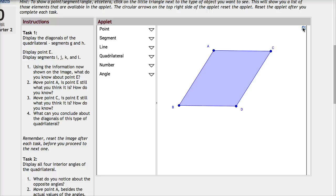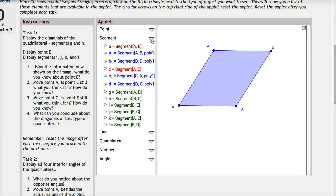The next thing you'll notice in your set of instructions is that it tells you to do certain things. For instance, when I look at task one, it says to display the diagonals of the quadrilateral, segments G and H. In order to do that, you're going to drop down the little segment indicator, and then you're going to find segment G and click on it, and segment H and click on it. That's how you have displayed those two segments.